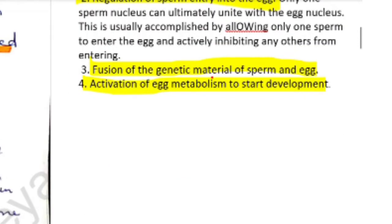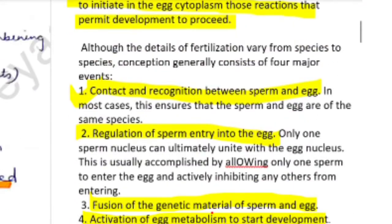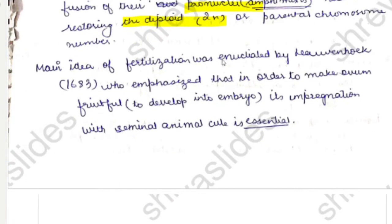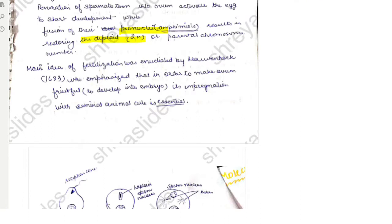In more detail for the introduction: fertilization involves penetration of a mature ovum by a spermatozoon and the fusion of their respective male and female pronuclei. Penetration activates the egg to start development, while fusion of the pronuclei restores the diploid (2n) chromosomal number. The main idea of fertilization was noted by Leeuwenhoek in 1683, who emphasized that impregnation of the ovum with seminal material is essential.